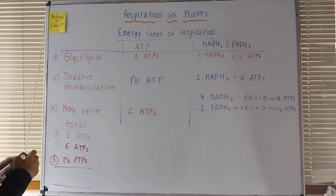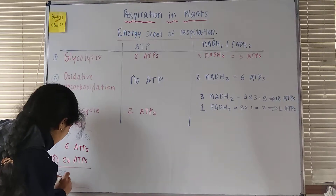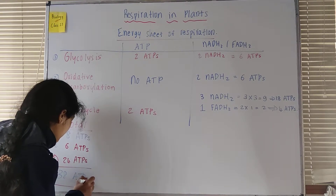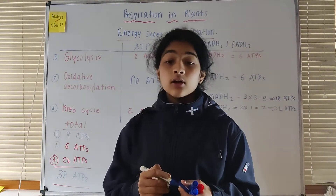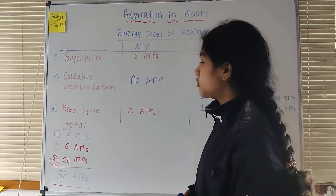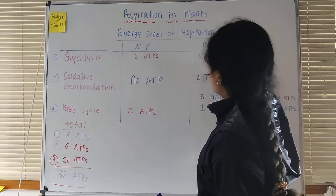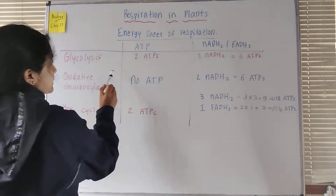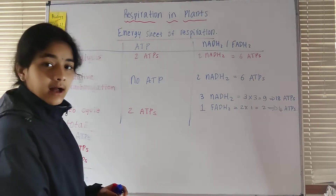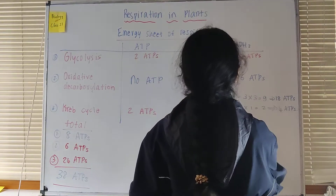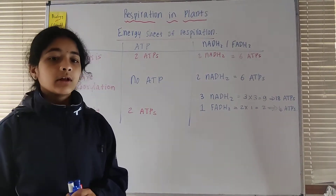Adding all steps together: eight plus six plus twenty-four gives thirty-eight ATPs in total. However, it is very important to understand that in these thirty-eight ATPs, two ATPs are actually used up to pump the two NADH2 synthesized during the process of glycolysis into the mitochondria.